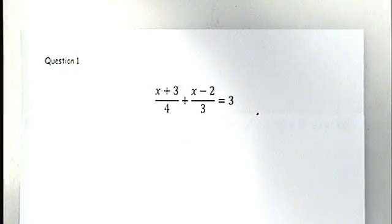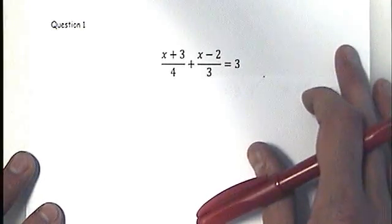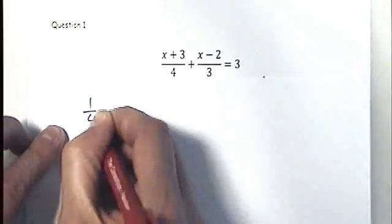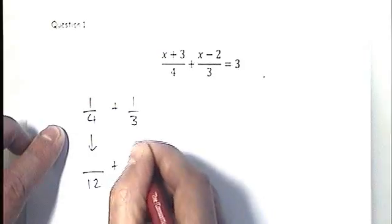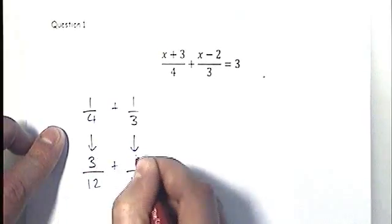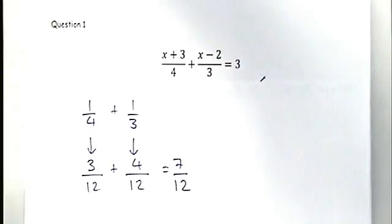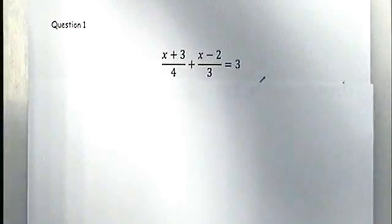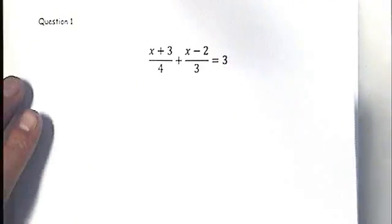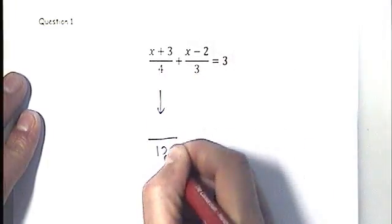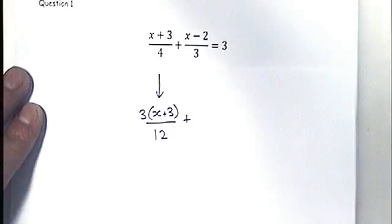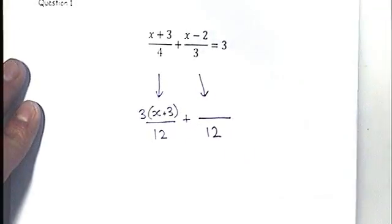The second method uses a common denominator — something some students prefer. Just as with plain numbers you'd convert one quarter and one third into twelfths, we're going to do the same here. With numbers: three twelfths plus four twelfths is seven twelfths. Here we have algebra instead of plain numbers, so we need to make both fractions have a denominator of twelve.